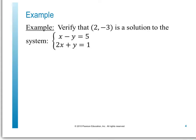Let's verify that (2, −3) is a solution to the system x minus y equals 5, and 2x plus y equals 1. Remember, it has to satisfy each equation in that system. I'm going to plug in 2 for x and negative 3 for y. If I get a true statement after substituting in both equations, I'll say that it is a solution.